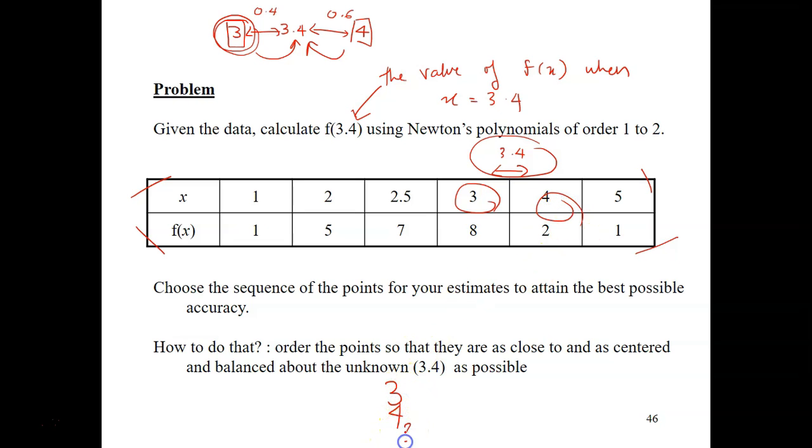And then only the fourth point. And then, what is the third point? The third point you have to find, is it 2.5 or 5 that is closer to 3.4? Of course, it's 2.5.